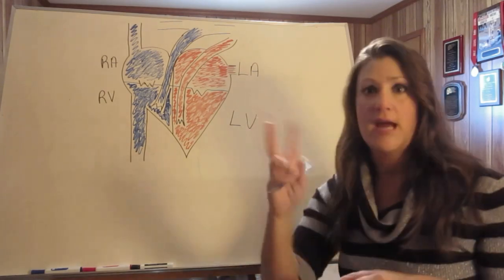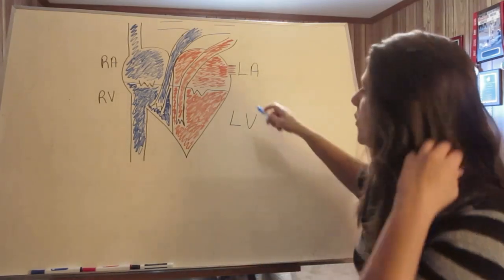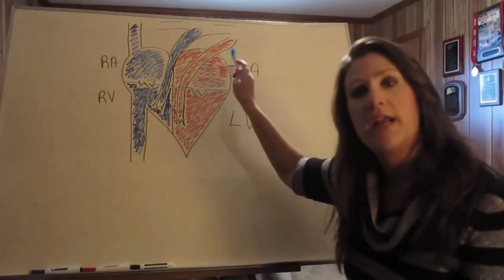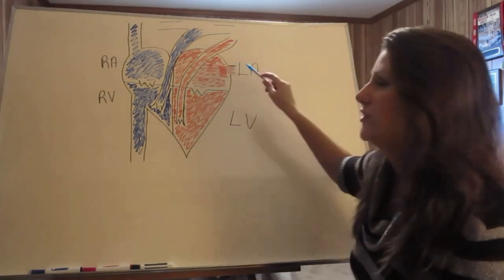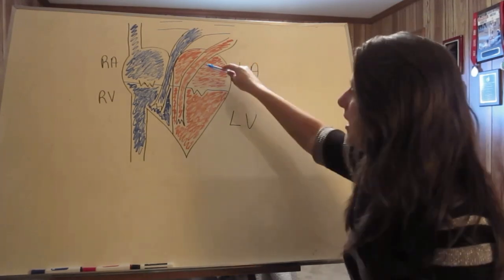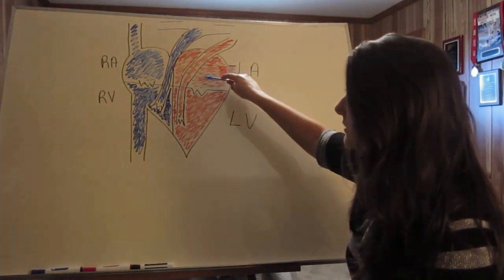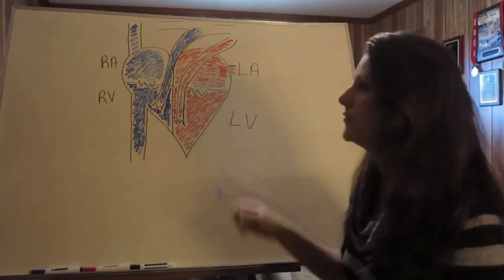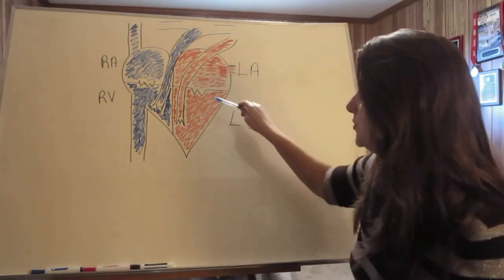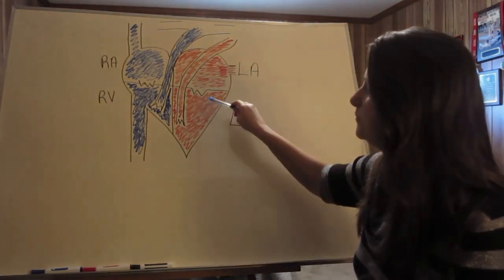The pulmonary veins carry blood back to the left atrium. From there, oxygenated blood travels through the mitral valve to the left ventricle.